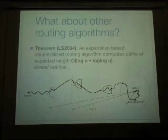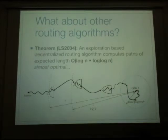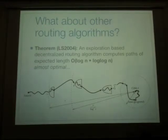The conclusion is that at each step, with probability one over log n, you will divide the distance by two. So it will take log n squared times to reach the target, because it will take you log n steps before dividing by two, then log n steps again before dividing again by two, and so it will be log n squared.